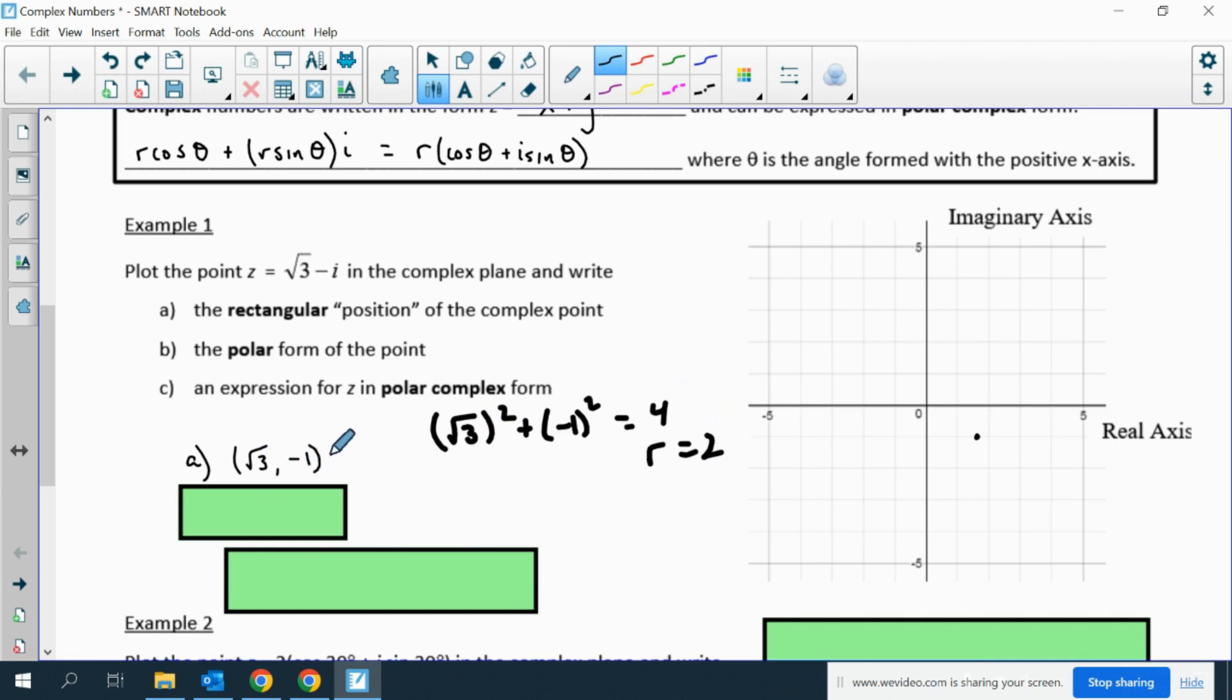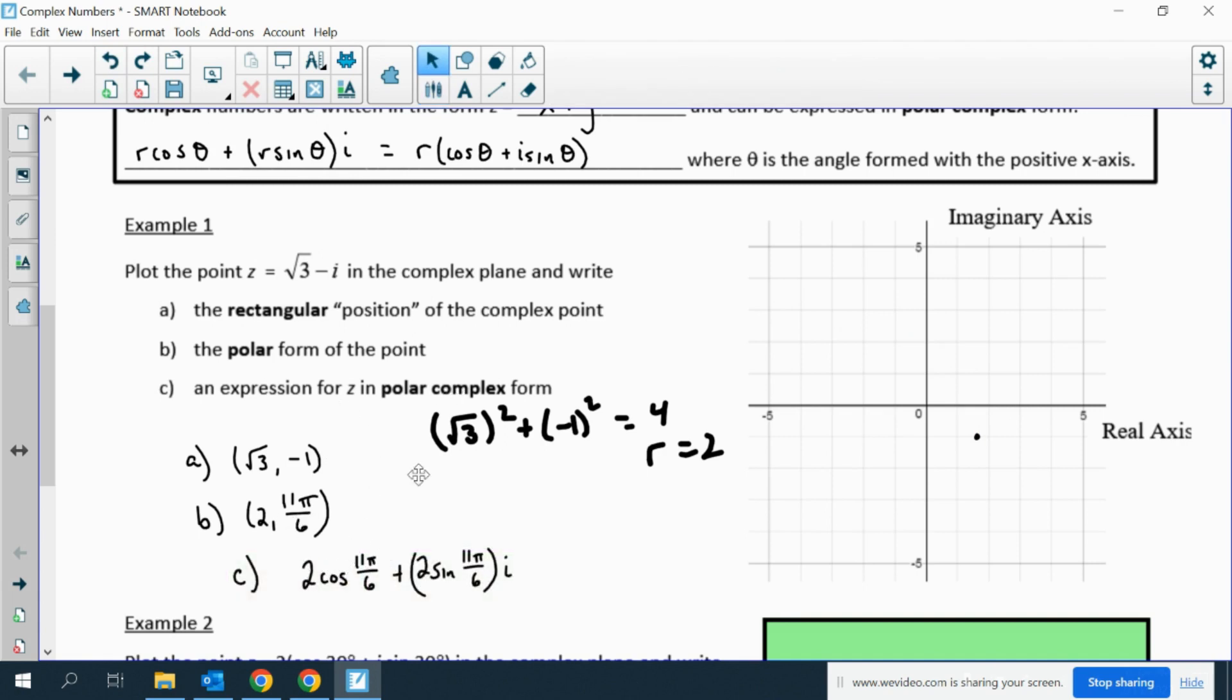Then you could use the arctan to find the angle, or you could just realize that this point is something we should have memorized. That's a pi sixth reference angle in the fourth quadrant. Then you can rewrite this in polar form using r and theta: 2 cosine 11 pi sixths plus 2 sine 11 pi sixths i, or you can write it with the 2 on the outside.